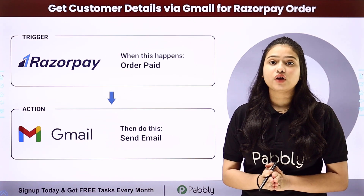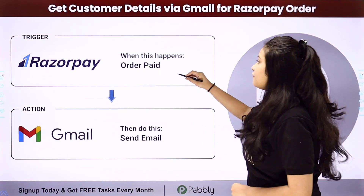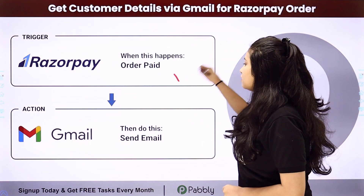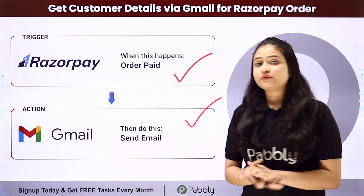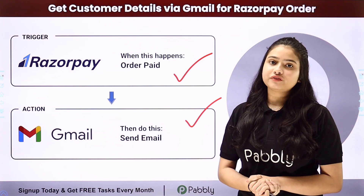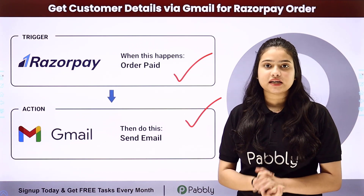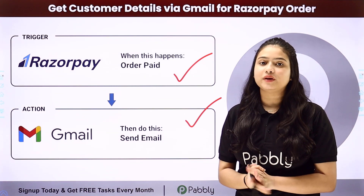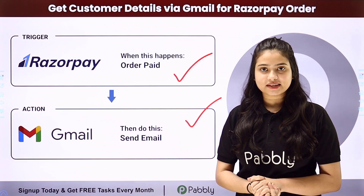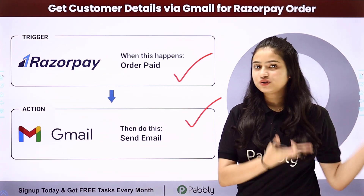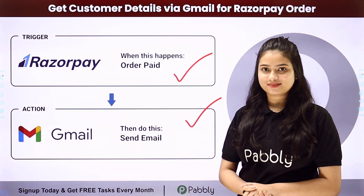We have Razorpay in our trigger and Gmail in our action. We will be connecting both of them using Pabbly Connect in order to automate this entire process. To learn this entire automation step by step, let me take you to my screen.